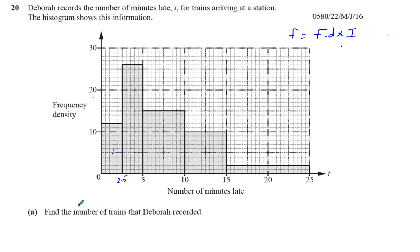The question says find the number of trains that she recorded, so we want to find how many trains are represented in this histogram. I have to work out the area of each bar. For the first bar, its height — the frequency density — is 12 and the interval is 2.5, so the frequency is 12 times 2.5. 12 times 2.5 gives you 30. The second bar's width is also 2.5, but its height this time is 26, so the second bar is going to be 26 times 2.5.